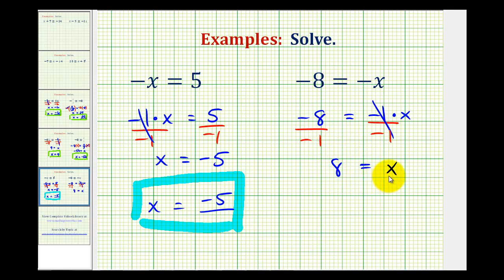So our solution is 8 equals x, which is normally written as x equals 8. So I hope this explanation helps clarify how to solve one-step equations that involve negative x or the opposite of x.